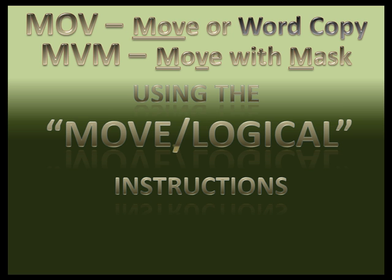The only difference between a Move and a Move with Mask is that the Move instruction copies the entire 16-bit word, whereas Move with Mask blocks some of the bits of the 16-bit value from moving into the destination. So if you had a 16-bit input module and only wanted to move three or four of the bit values from that word in memory, you would use a Move with Mask.